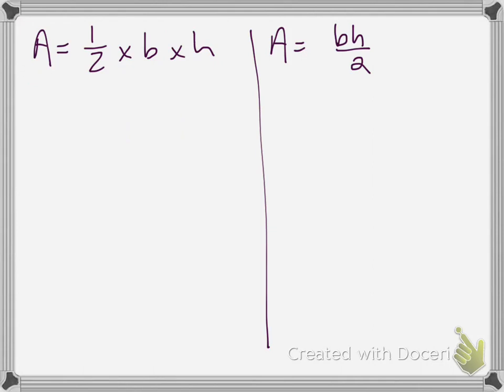The first thing to think about here is the formula. So when I did a previous video on finding the area of a triangle, I gave you these two different formulas. One was 1 half times base times height, and one was base times height over 2.